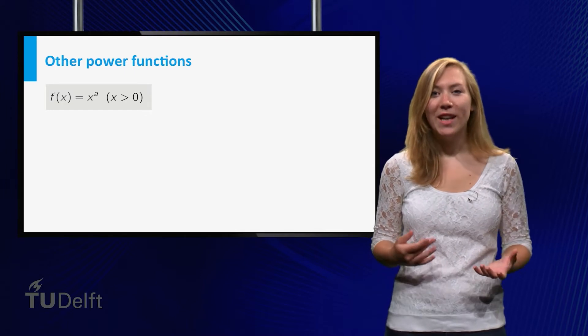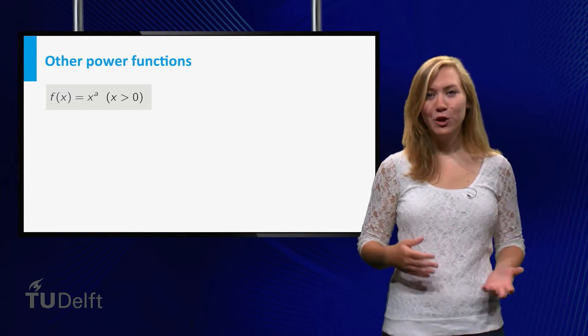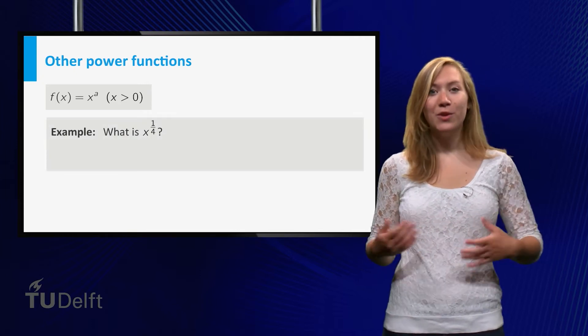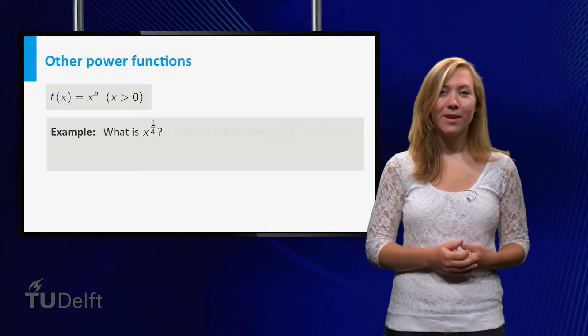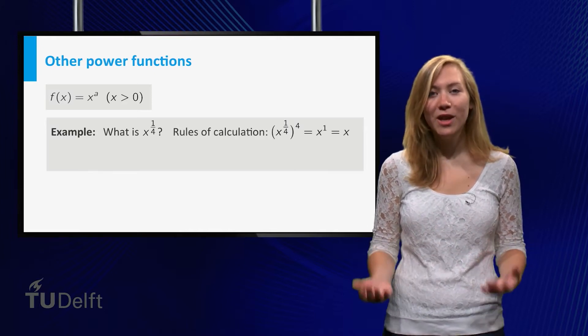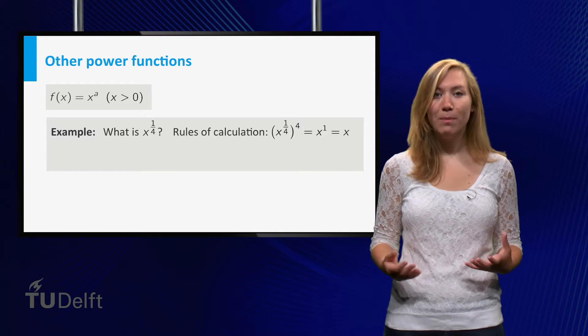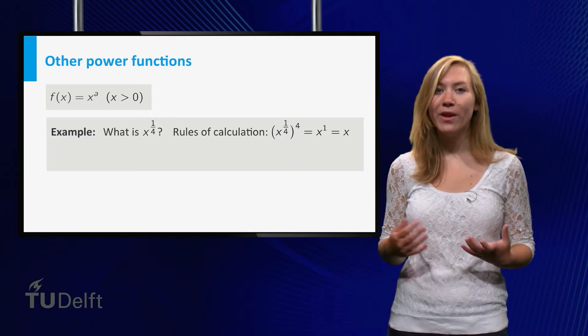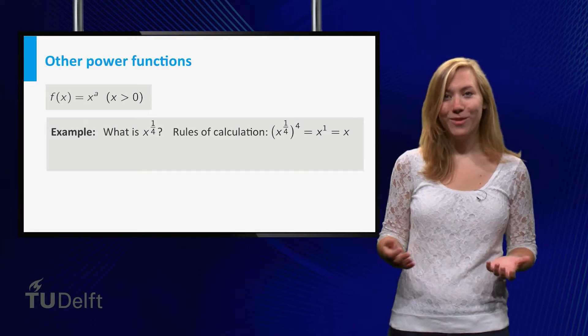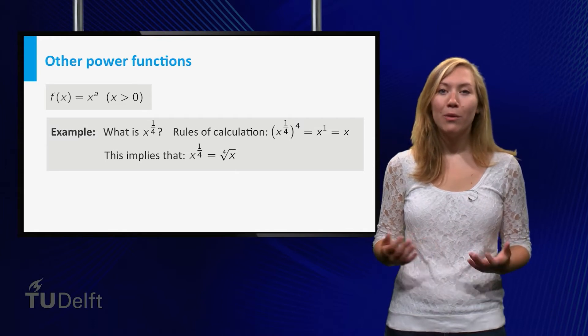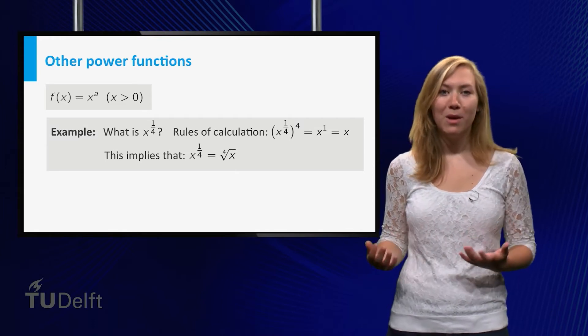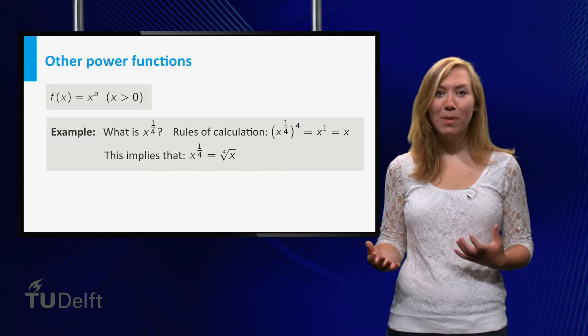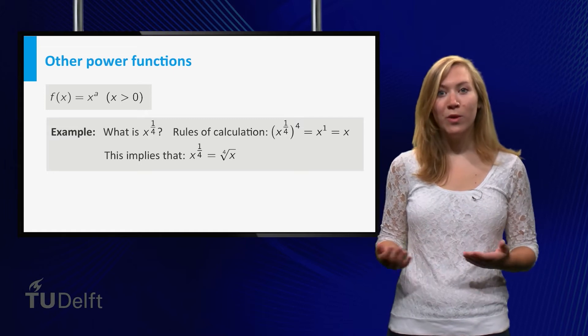We can use the rules of calculation to define the power function when a is a fraction. For example, what should x to the power 1 over 4 be? Well, according to the rules of calculation we should have that x to the power 1 over 4 to the power 4 is equal to x to the power 1, which equals x. We define x to the power 1 over 4 to be the positive number which has x as 4th power. That is, x to the power 1 over 4 is the 4th root of x.